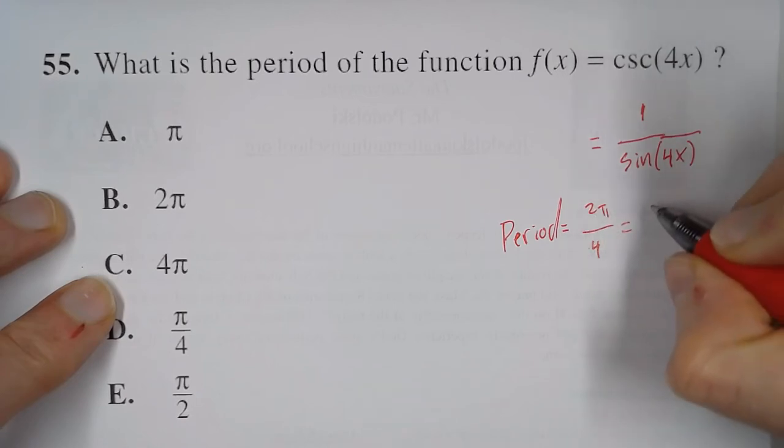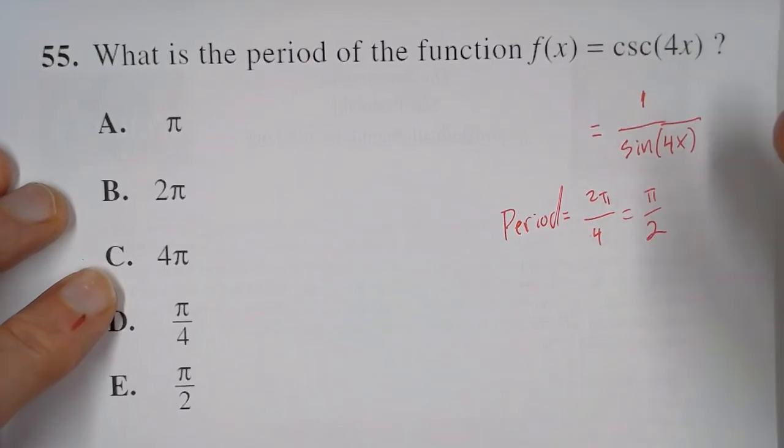So, we can cancel a 2 out of the top and out of the bottom, leaving π on top and 2 on the bottom.